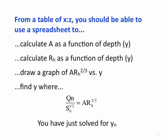This is simply moving a few terms around on the Chezy-Manning equation, but once you've done this, you've just solved for Y because you have the graph of A, R sub H to the 2/3 versus Y, and you will have your normal depth.